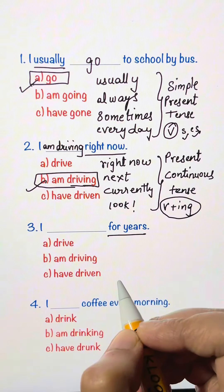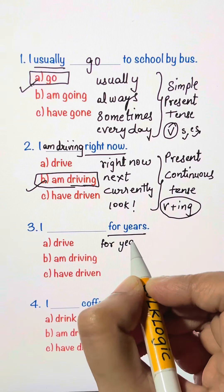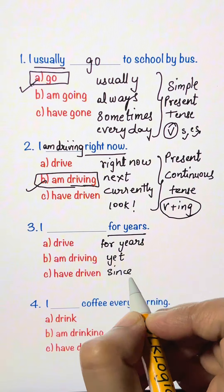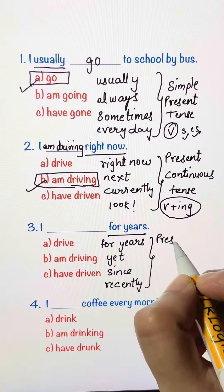I blank four years. So here the keyword is four years. Whenever you have words like four years, yet, since, recently, we use present perfect tense.